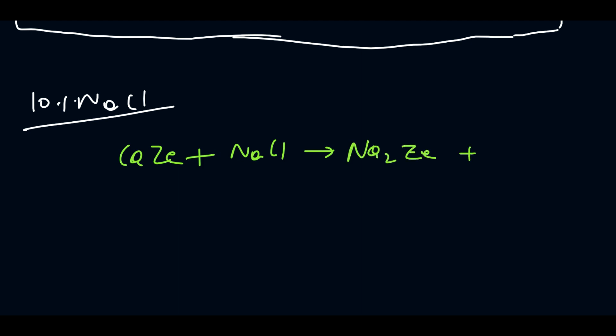For MgZe, magnesium zeolite plus twice NaCl gives Na2Ze plus MgCl2. This is all about the regeneration process.